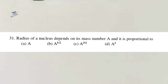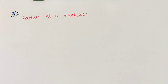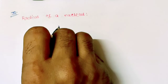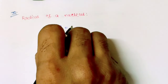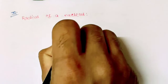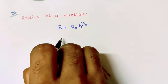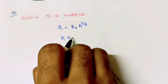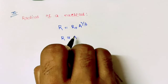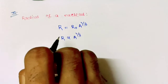Question number 31: The radius of a nucleus depends on its mass number A and is proportional to A^(1/3). We have R = R₀·A^(1/3), so radius R is proportional to A^(1/3).